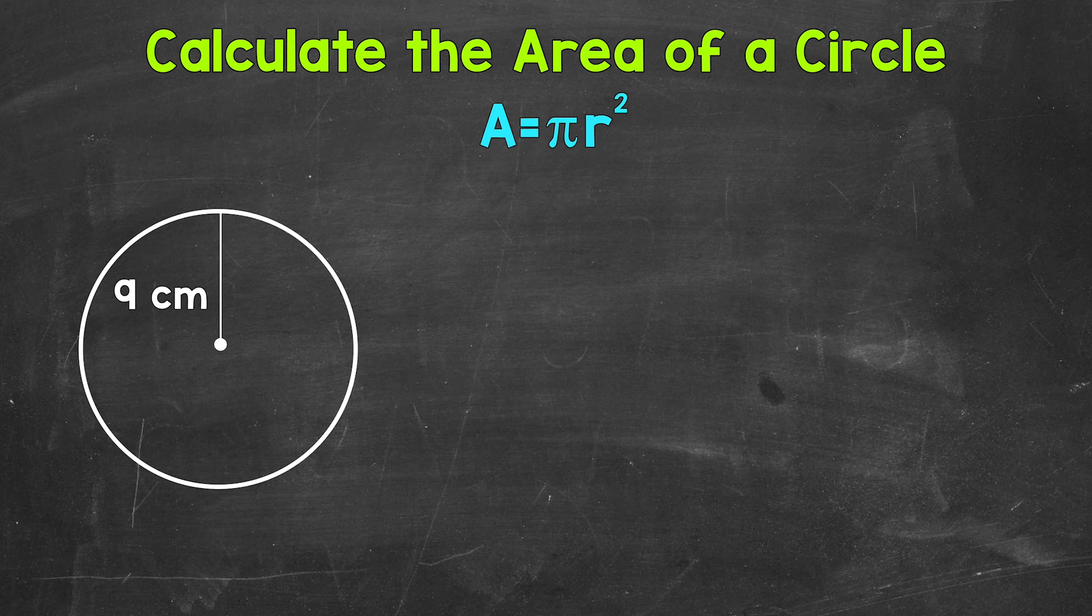Now the formula we use for the area of a circle is area equals pi r squared. So pi times the radius squared.